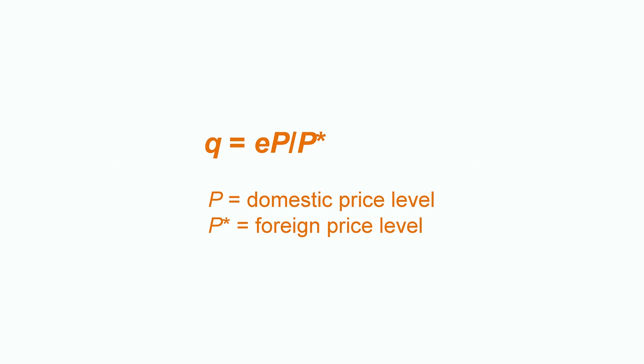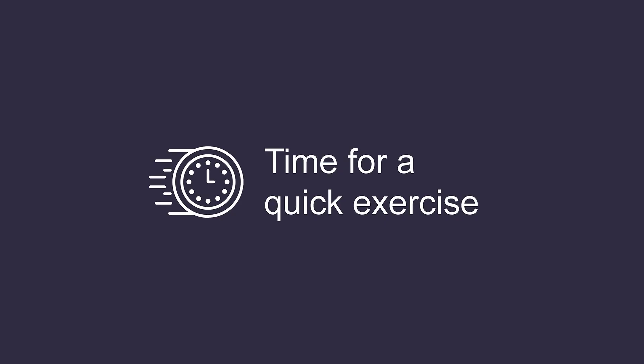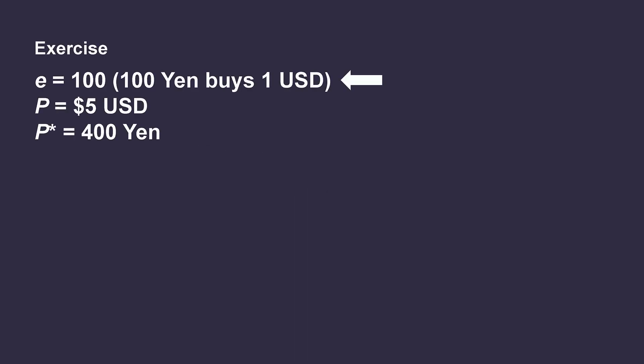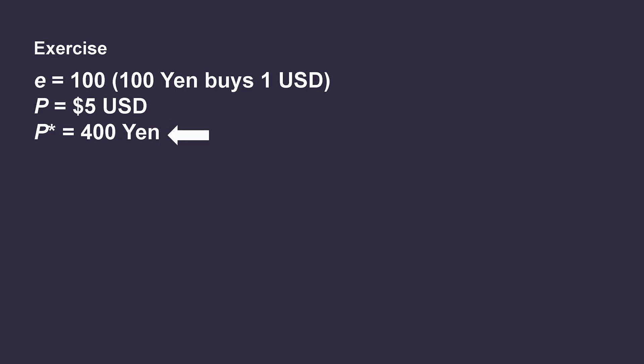Economists use the lowercase letter Q to denote the real exchange rate. So how do we calculate Q? Mathematically, we need the nominal exchange rate and relative prices to calculate it. So Q equals E times P over P star, where P is the domestic price level and P star is the foreign price level. Let's use an example: let E equal 100, that is 100 Japanese yen buys one US dollar. The price of Big Mac in the US is $5 — that's our domestic price P — and the price of Big Mac in Japan is 400 yen, that's the foreign price P star. Putting these numbers into the formula, we calculate Q as 100 times 5 divided by 400, which equals 1.25.